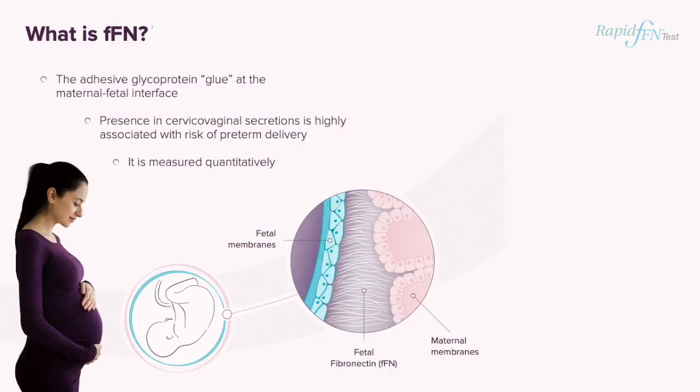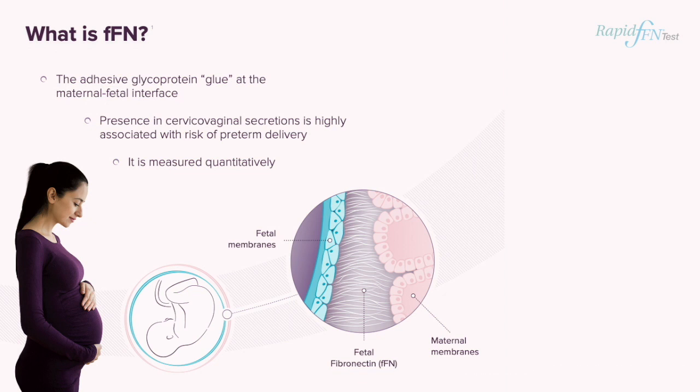Fetal fibronectin is the adhesive glycoprotein at the maternal-fetal interface. Presence in cervicovaginal secretions is highly associated with risk of preterm delivery. Likewise, its absence is very reassuring that imminent delivery is not likely, making fetal fibronectin an excellent negative predictor for helping to rule out women of true preterm labour.